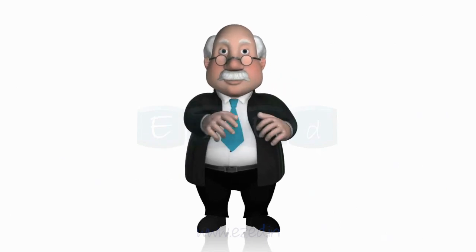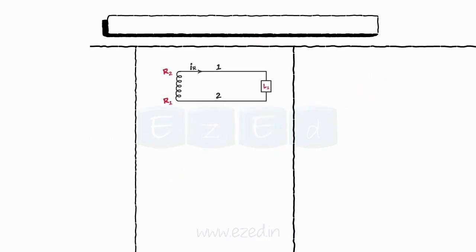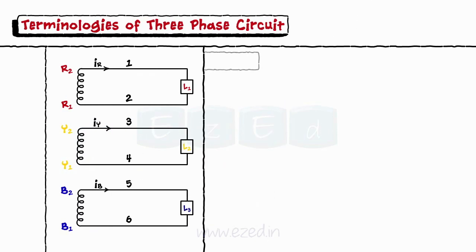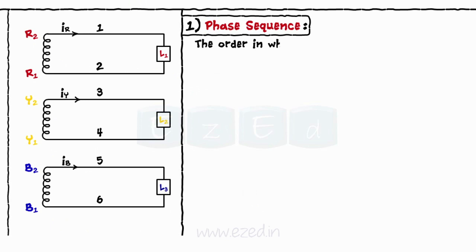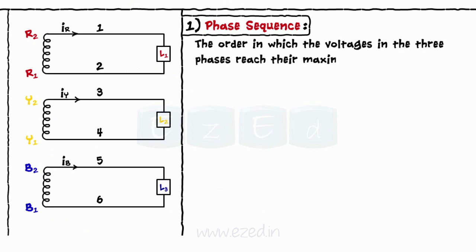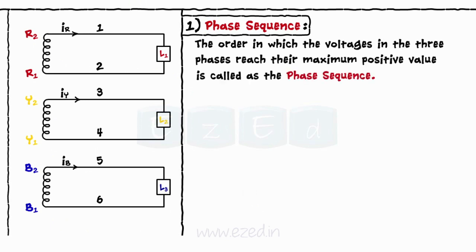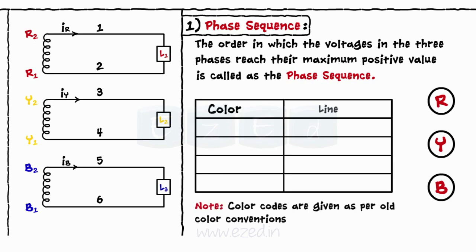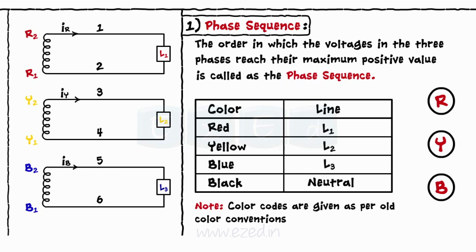Now let's study the terminologies used in three-phase circuits. The order in which the voltages in the three phases reach their maximum positive value is called the phase sequence. Thus for the three-phase system shown, the phase sequence becomes R, Y, B. These phases are also called lines. Thus we have color codes such as red for line 1, yellow for line 2, blue for line 3, and black for neutral.